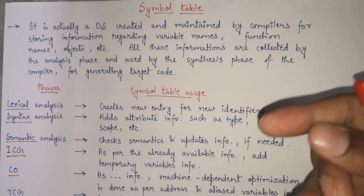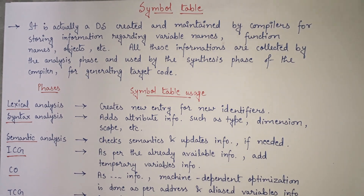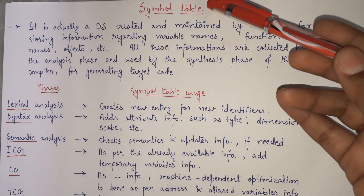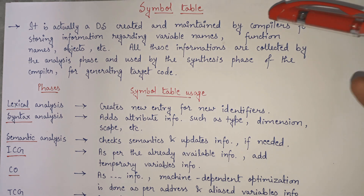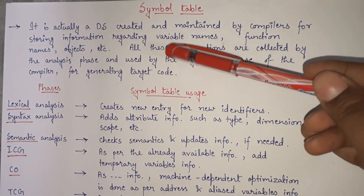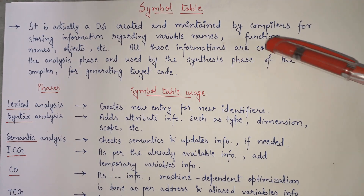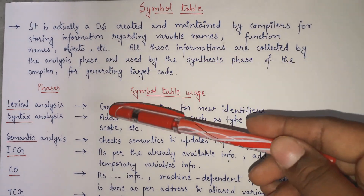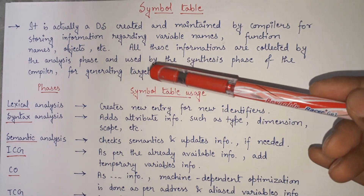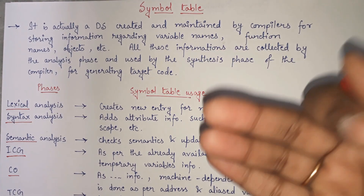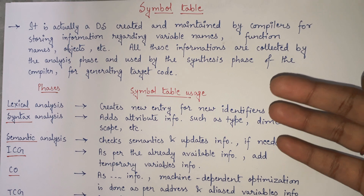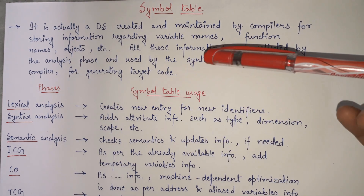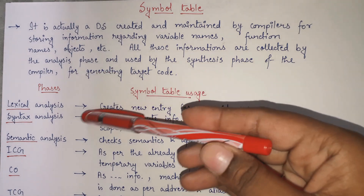You can say that it is a data structure that stores information which will be used by compilers later on — the information is filled by the compiler and may be used in the future by the compiler itself. So it is a data structure that the compiler maintains for its own benefit. All these informations — variable names, function names, objects, etc. — are collected by the analysis phase and used by the synthesis phase of the compiler for generating code.